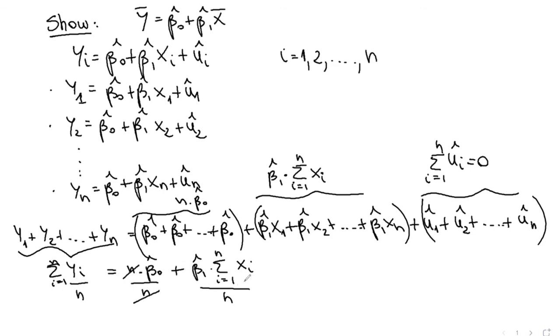Notice that this is just y bar. So all of this implies that y bar is equal to beta naught hat plus the beta 1 hat times, and here is the sum of all x's divided by n, which is just x bar. And we just show what we were asked to show.